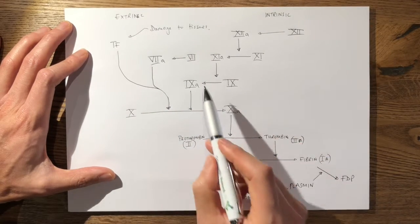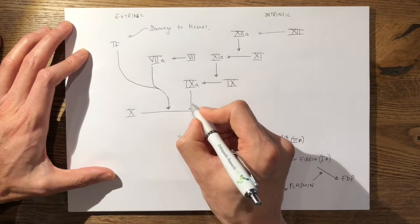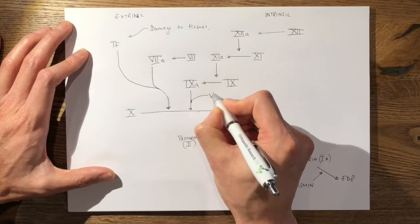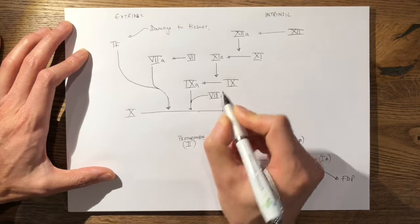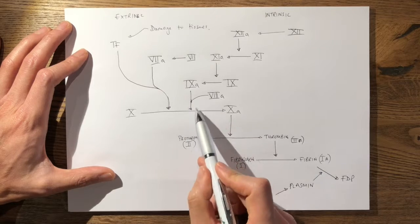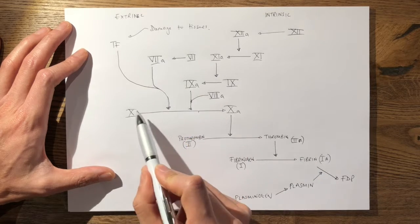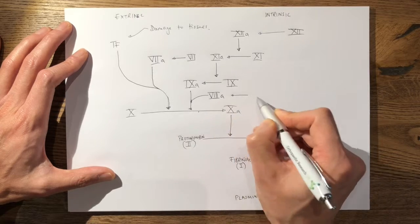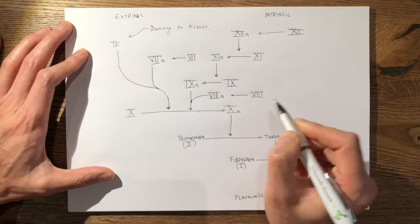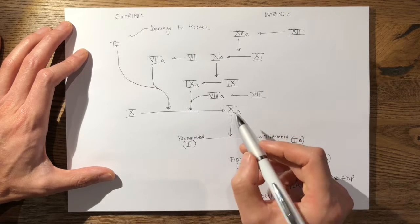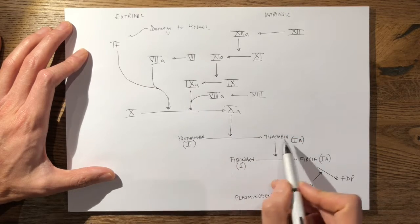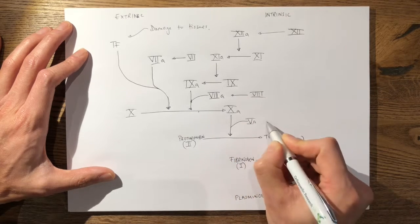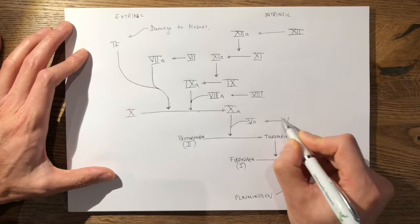In addition, from factor 9 to factor 10a, factor 8a also helps — along with factor 9a, it promotes the conversion of factor 10 to factor 10a. And of course factor 10a promoting prothrombin to thrombin is also aided by factor 5a, which comes from factor 5.